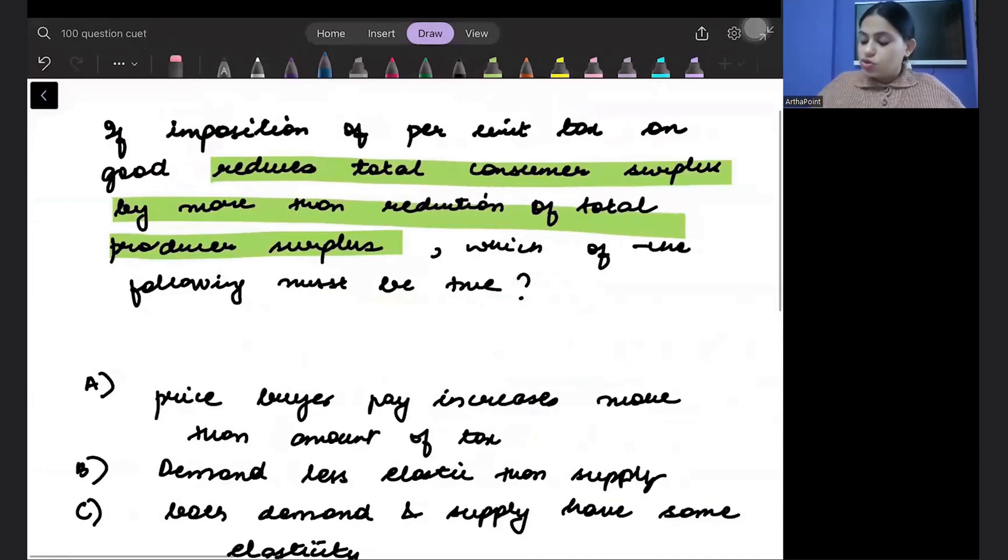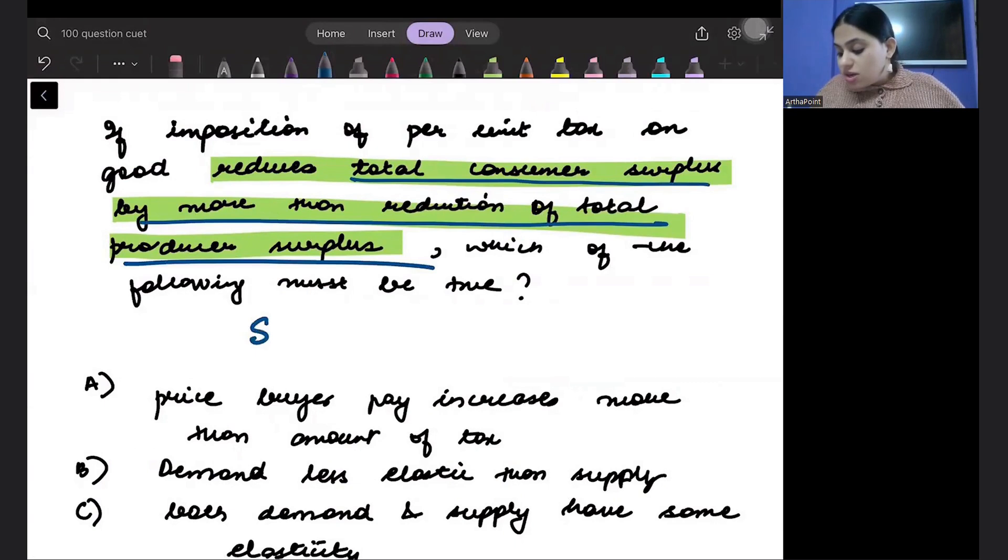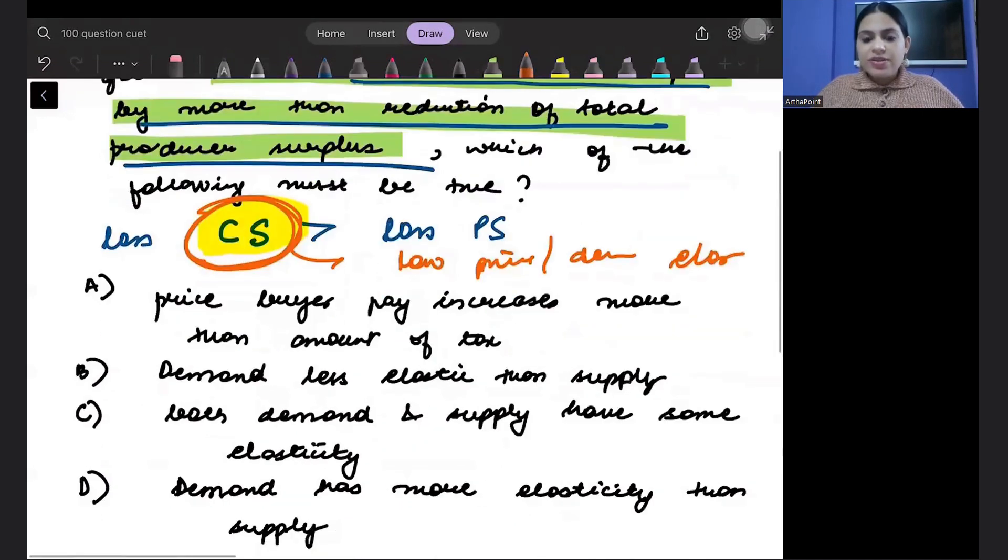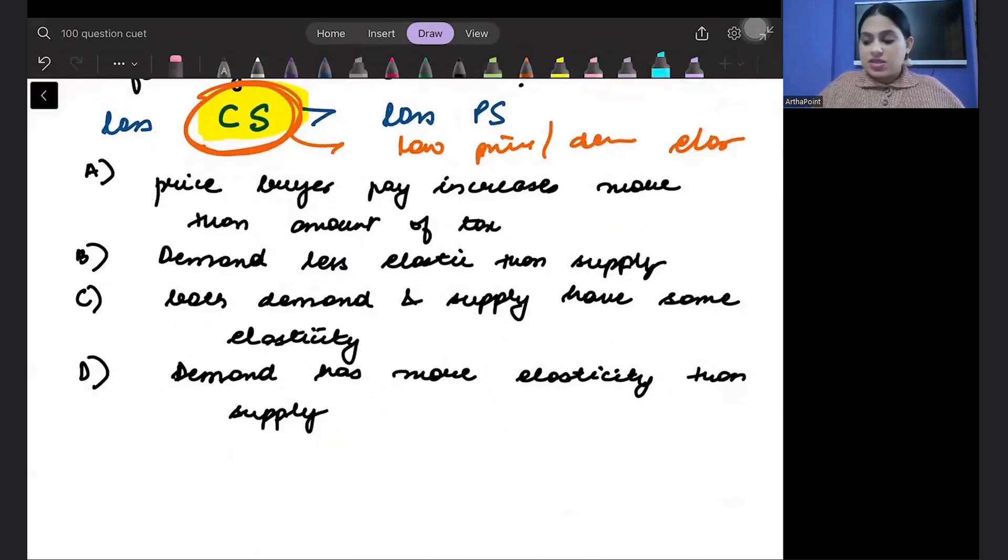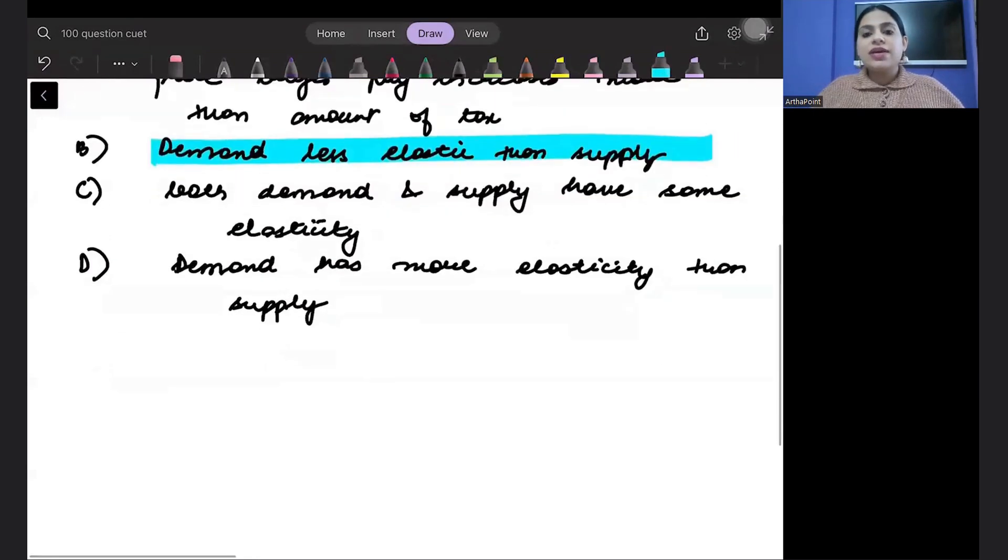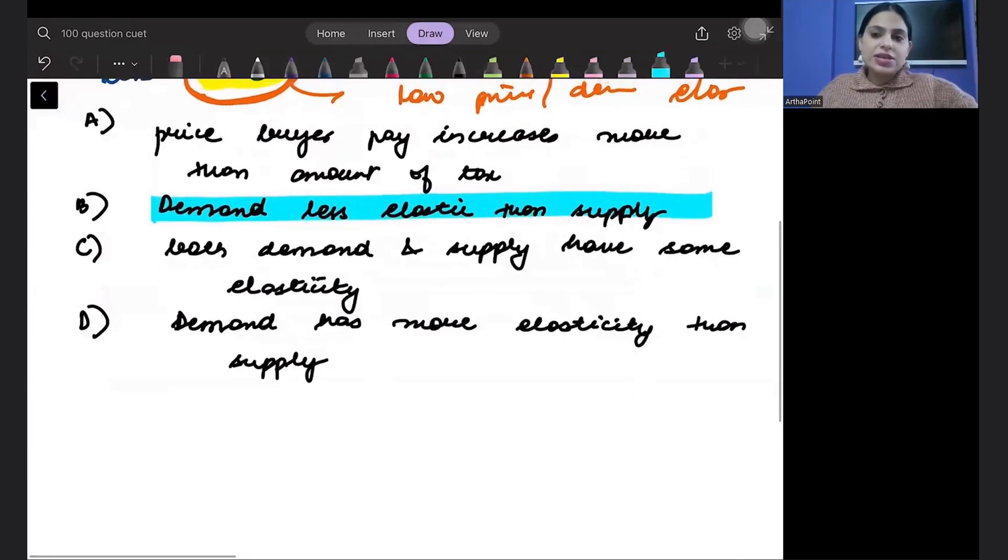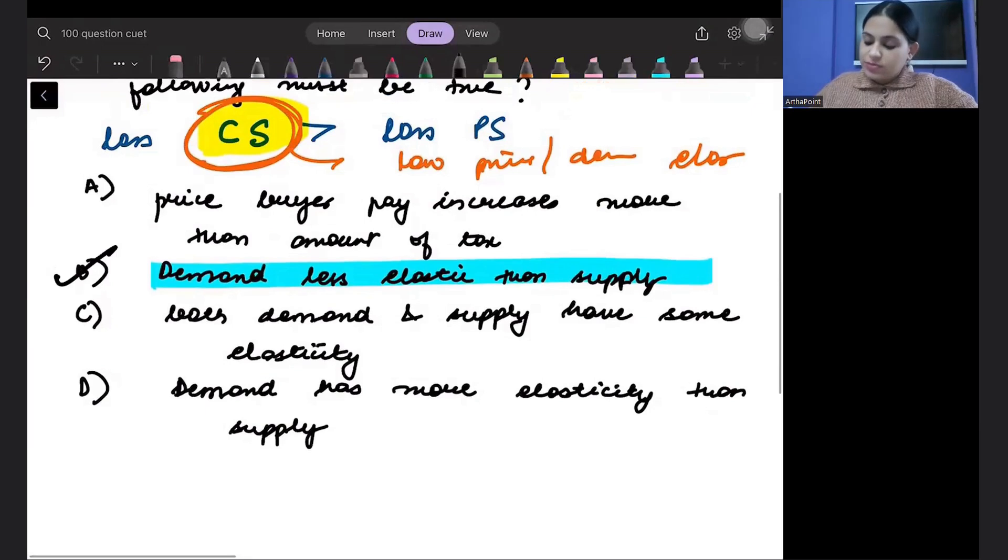So this is a very simple question. This says consumer surplus is falling more than producer surplus. Meaning the consumer's loss due to tax is more than the producer's loss. It means that consumer will be facing more burden of the tax. But consumer faces more burden when? When he has low demand elasticity. So what should happen in this case? We know that in this case, the answer is demand is less elastic than supply. Whichever has less elasticity, they will bear more burden of the tax. So answer to this question will be B.